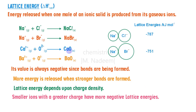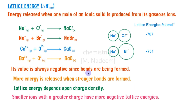Let's compare the lattice energy of calcium oxide and barium oxide. Calcium and barium are in the same group of the periodic table, but barium is below calcium. Both carry a 2+ charge, but barium being larger in size has less charge density. So the lattice energy of barium oxide will be less negative than that of calcium oxide.